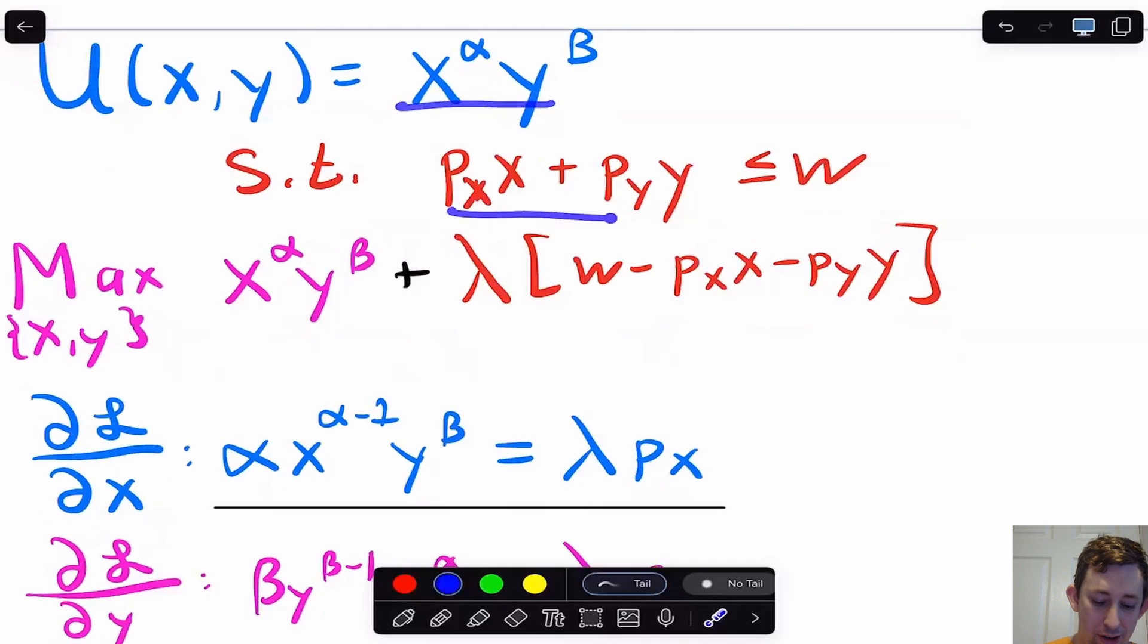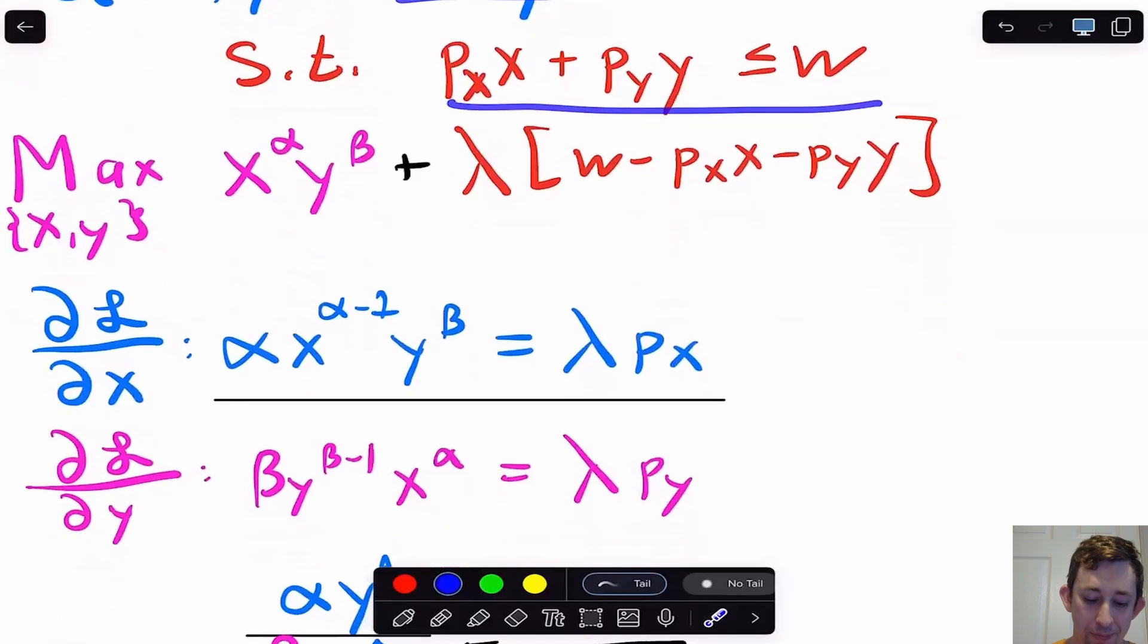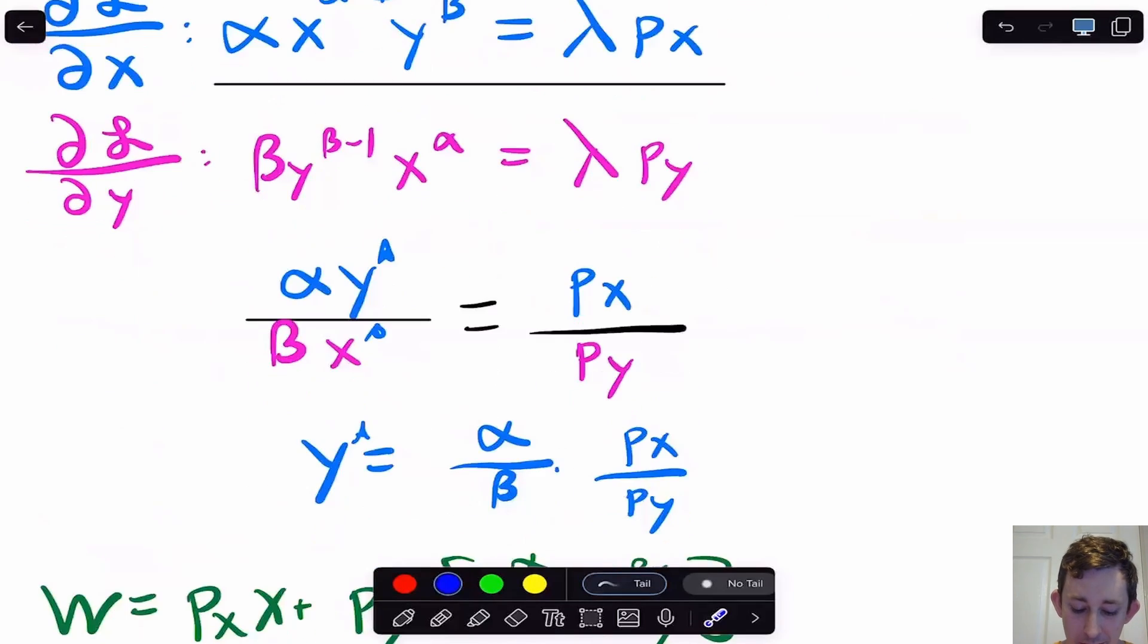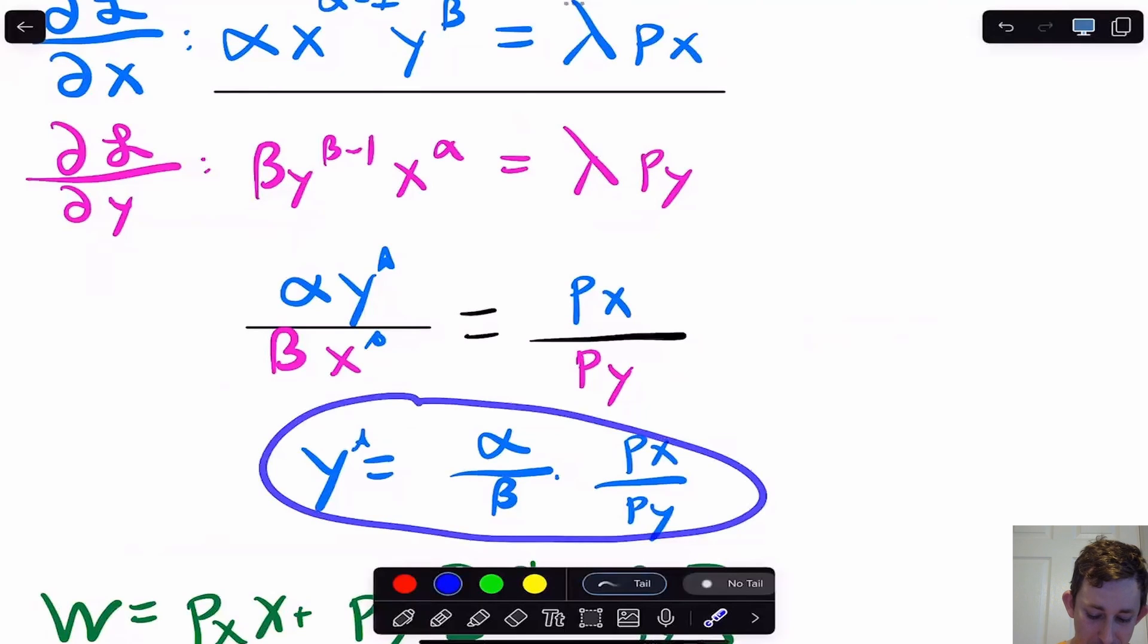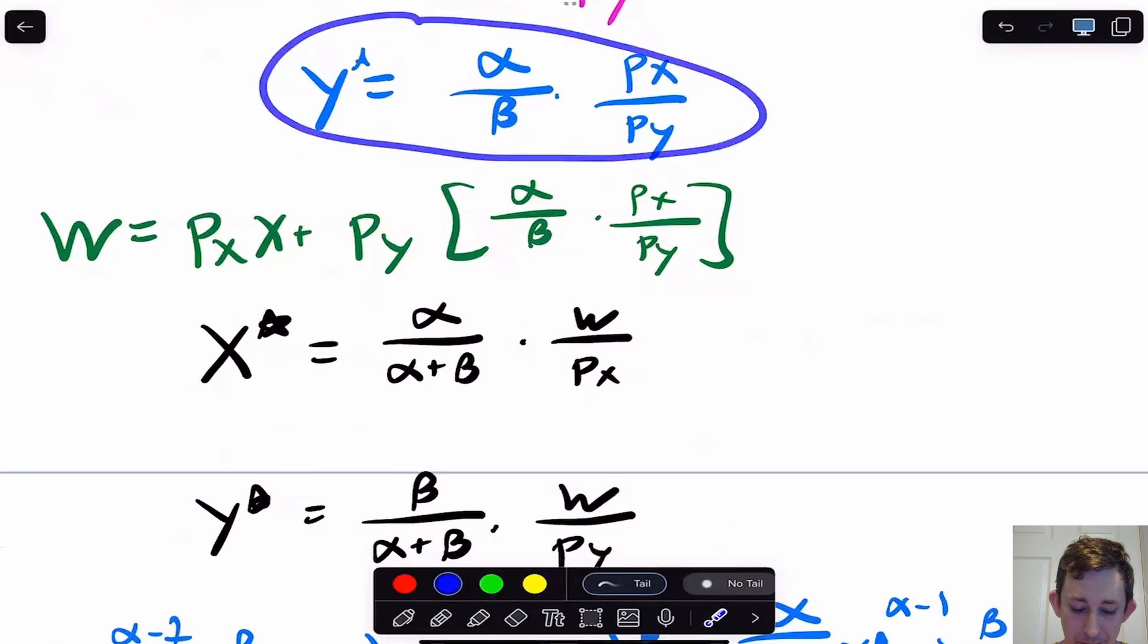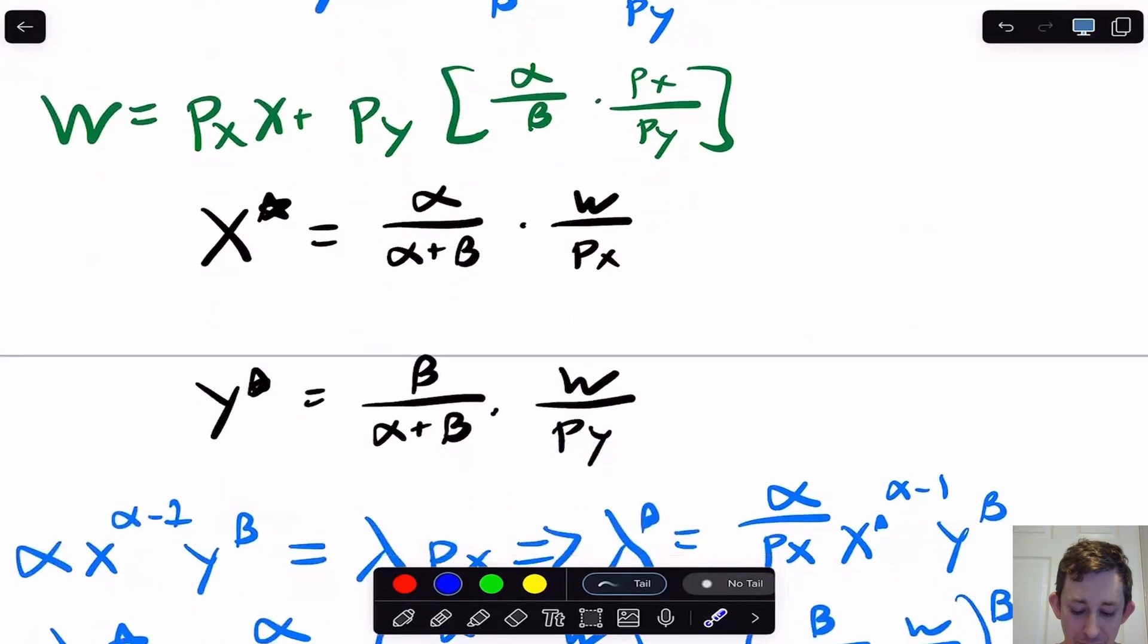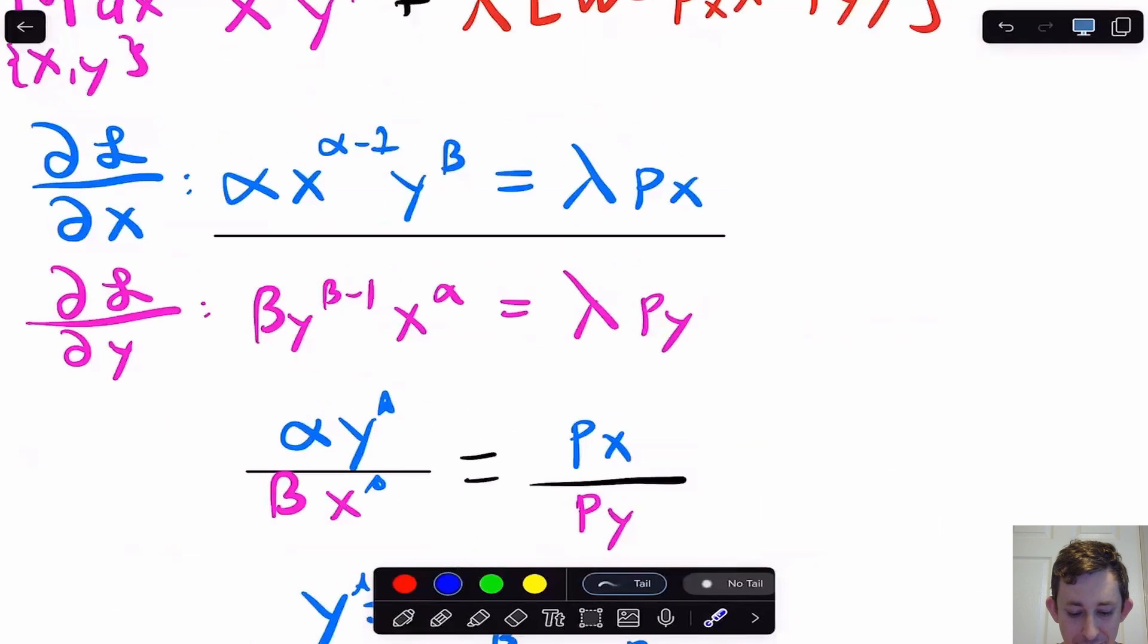Just very briefly, if this is my utility function subject to my budget constraint, then I'm going to set up the Lagrangian, which is my objective function plus Lambda times my constraint set equal to zero. I'm going to take some first order conditions, it's going to look like a mess. Going to divide them, and I'm going to get that y star is alpha over beta times bx over py. I'm going to use my budget constraint, going to get x star and y star. We showed this shortcut with Cobb-Douglas utility before.